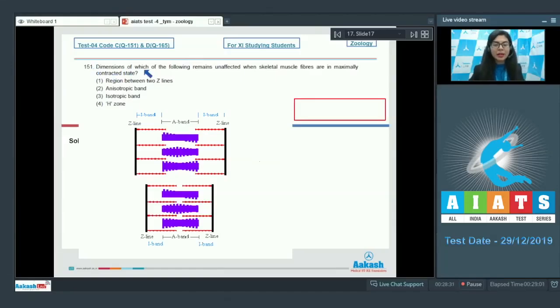Question 151: Dimensions of which of the following remains unaffected when skeletal muscle fibers are in maximally contracted state? Region between two Z lines, isotropic band, isotropic band, or H zone? The question is asking which remains unaffected when the fibers are maximally contracted. Option number one, region between two Z lines - as we know there is shortening of the length of sarcomere. This is the length of sarcomere, the distance between two Z lines. It definitely shortens when the muscle is maximally contracted, so this can't be the answer.